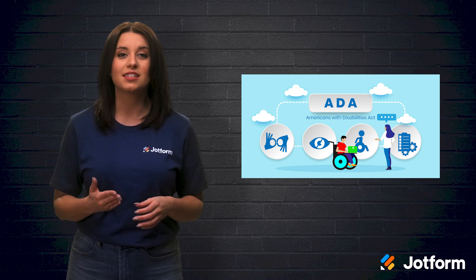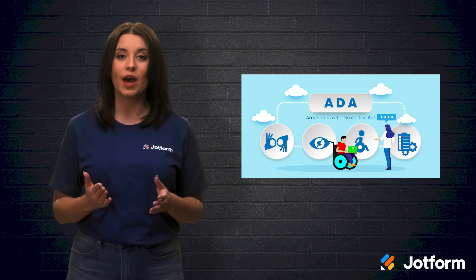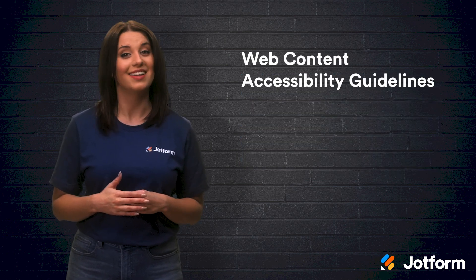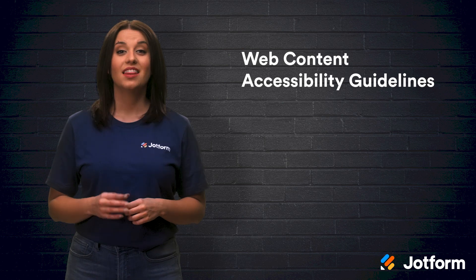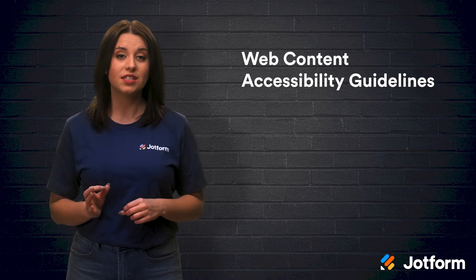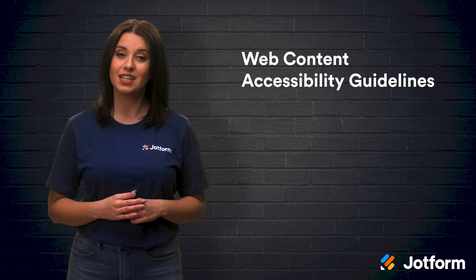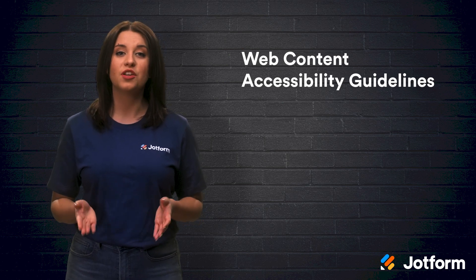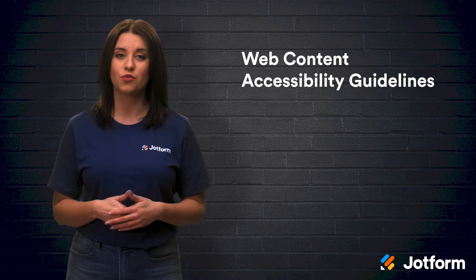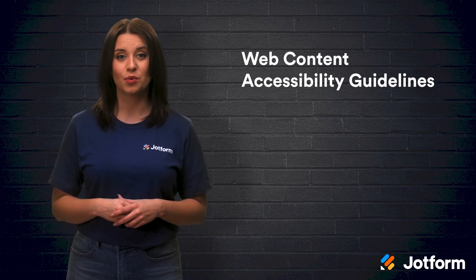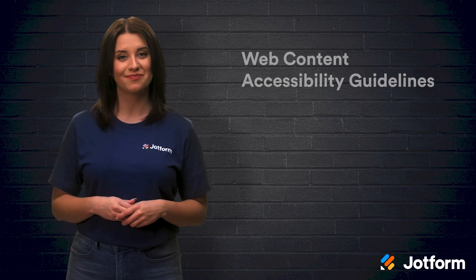So, to address this gap, the World Wide Web Consortium created the first Web Content Accessibility Guidelines in 1999. The guidelines name four principles to make web content more accessible to people with disabilities, and three levels of conformity, which determine an organization's performance in each area. Let's discuss the four principles and levels of conformance.